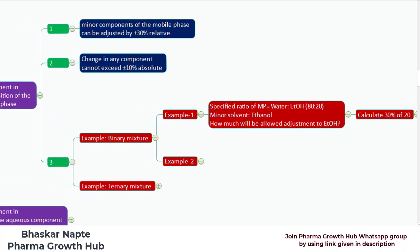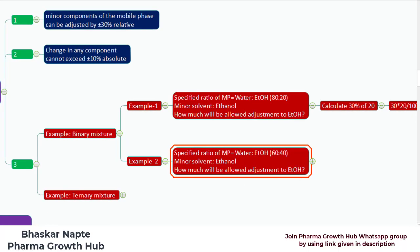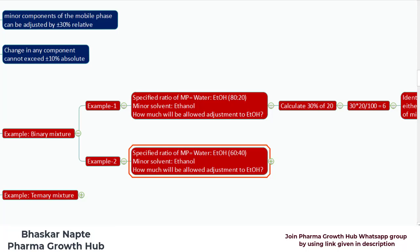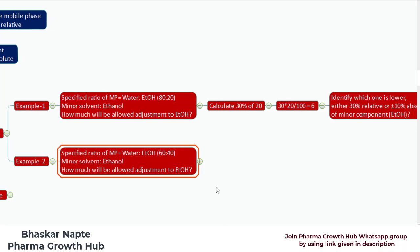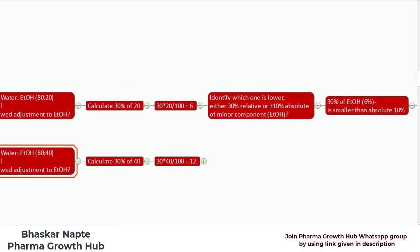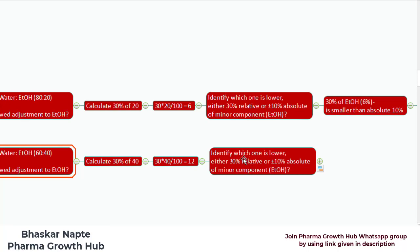This is for the binary mixture. I will also explain another example for binary composition. In this case, let us assume the mobile phase consists of water 60 and ethanol 40. The minor solvent is ethanol and you need to calculate the allowable change in the quantity of ethanol. Calculate 30% of 40 — the 40 coming from ethanol, which is the minor component. So 30% of 40 becomes 12. Now identify whether 30% relative or 10% absolute is lower. In this case, the 30% of ethanol is actually 12%, which is more than the absolute 10%.